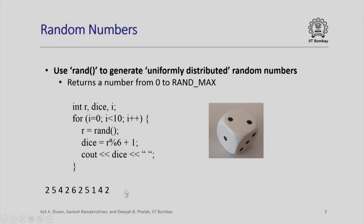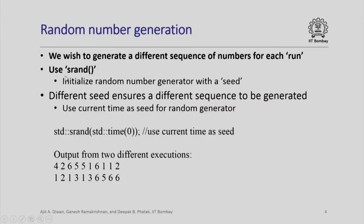Unfortunately, if I run this program again, I will get the same sequence because the rand function starts with a predetermined value called a seed value to generate the sequence of random numbers. Obviously, if you want to simulate real life situations, you would like to generate different sequences on different occasions. You can do that by using a function called srand. S stands for seed and it initializes the random number generator with a seed. Of course, if you give the same seed, it will still generate the same sequence. The trick is to give a different seed value to ensure that a different sequence is generated.